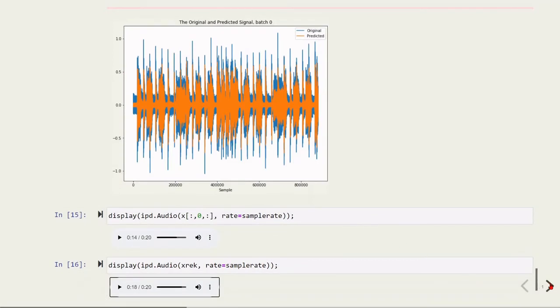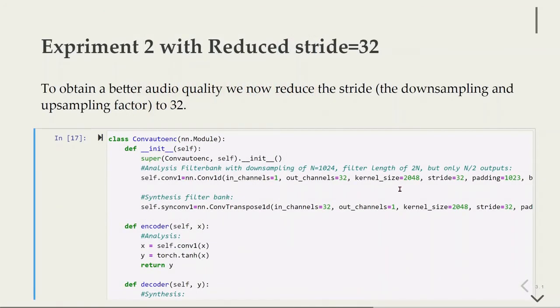In the next experiment, we are going to change just the stride. That means that we are reducing the down sampling and up sampling factor. Before we used 512 and now we are using 32. You see that now the number of subbands is equal to the factor for down sampling and up sampling. We have 32 output channels, we have the same kernel size as before, but we have now stride equals to 32. We will try to see what happens. Basically now we are processing more data because our strides are much smaller.